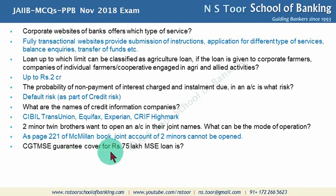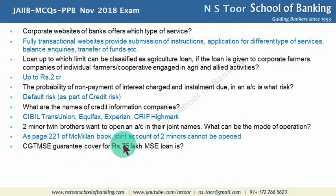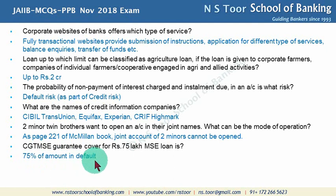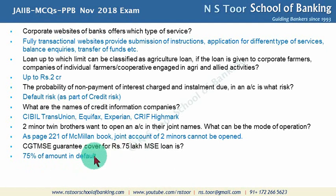The CGTMSE guarantee cover for an MSE loan of Rs. 75 lakh is 75% of the amount of default. However, if the loan is to a micro enterprise up to Rs. 5 lakh, the cover available is 85%. When the amount is more than Rs. 5 lakh, the cover is 75% of the amount of default.